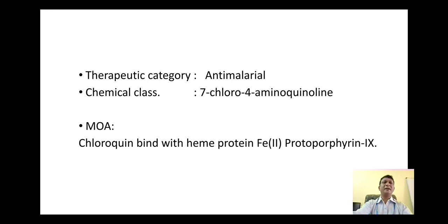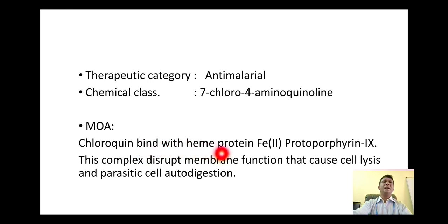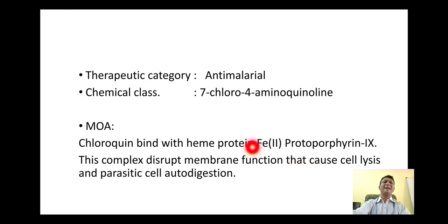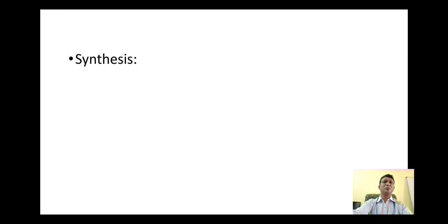The mechanism of action of chloroquine involves its binding with the heme protein, that is ferrous protoporphyrin IX. This complex disrupts the membrane function of the parasitic cell, which ultimately causes cell lysis and auto-digestion of the parasitic cell. In this way, this compound exhibits anti-malarial action. As the name indicates, this compound is used in treatment of various types of malaria.